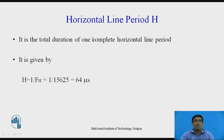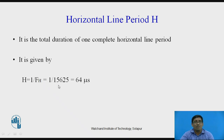The horizontal line period H is the total duration of one complete horizontal line. It is given by H = 1 divided by the frequency in the horizontal direction, which equals 1 divided by 15625, giving 64 microseconds. Therefore, the horizontal line period is 64 microseconds.